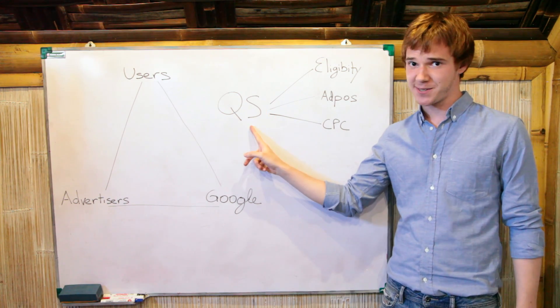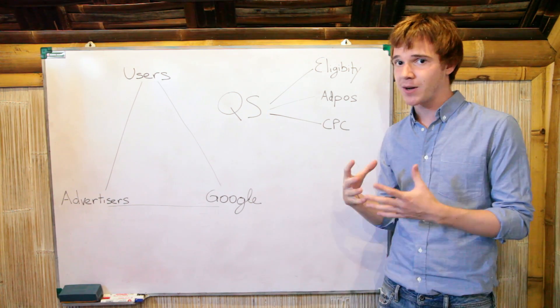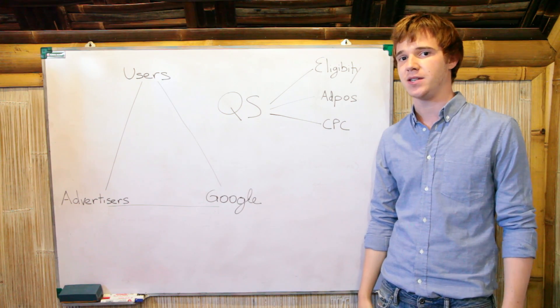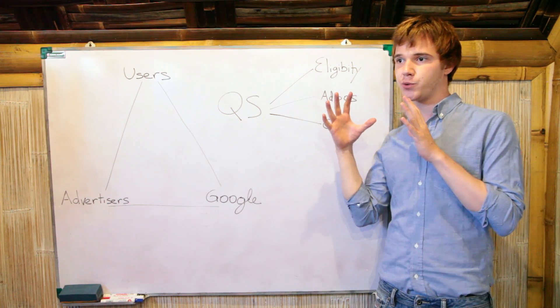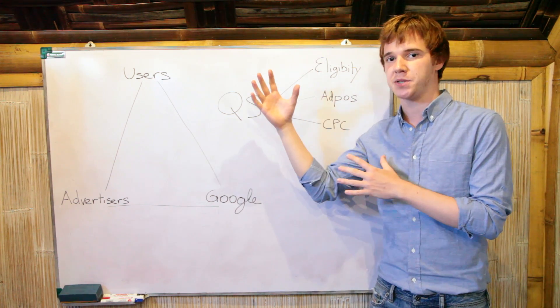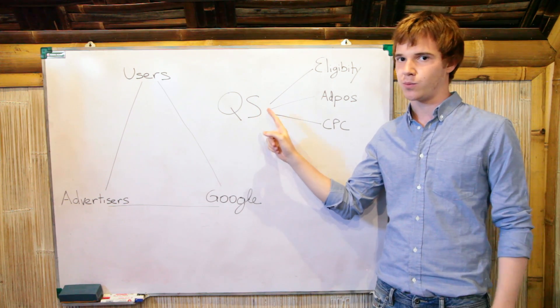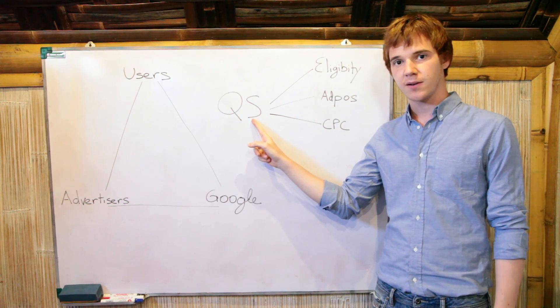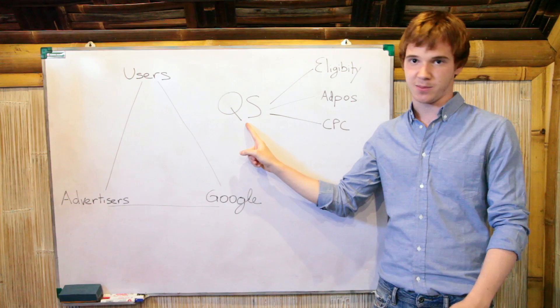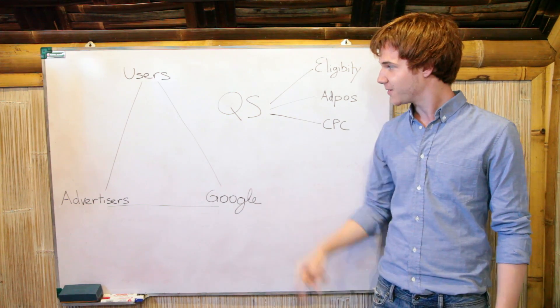Hey guys, so today we're going to talk about quality score because improving quality score is one of the highest leverage activities you can do. If you wanted to do 20% of effort for 80% of the results, quality scores would be what you should be focused on. Your account's got 99 problems, 98 of them are quality score, I can assure you.